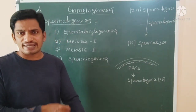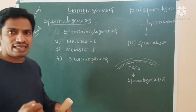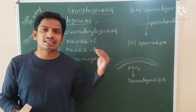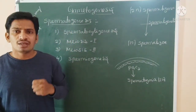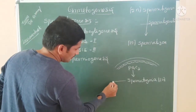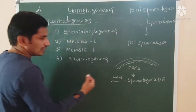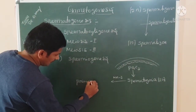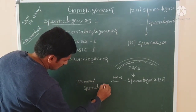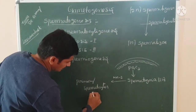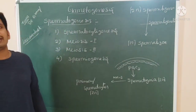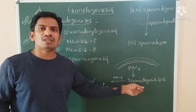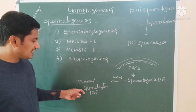This is known as spermatocytogenesis. In the latter stage, a number of spermatogonia are formed. Some of them undergo meiosis I, while some remain as spermatogonia. The spermatogonia that undergo meiosis I are converted into primary spermatocytes. These are also in the 2N stage because meiosis I has not yet completed.